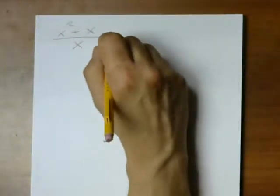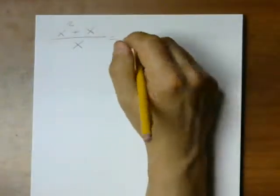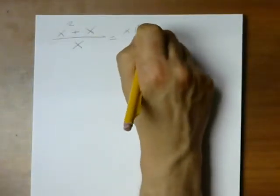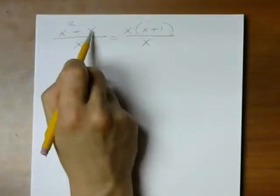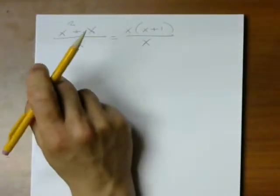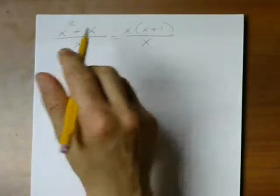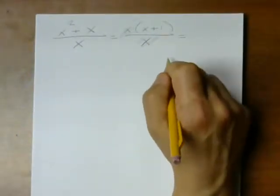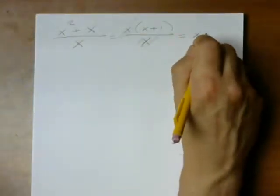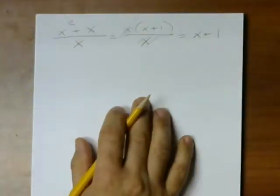So what I might think to do is, I can factor the top, right? Because the greatest common factor is x. There's an x I can take out of here and an x I can take out of there. And what I can do is say, okay, I'm going to cancel. I'm going to divide the top and the bottom by x, and I get x plus 1.